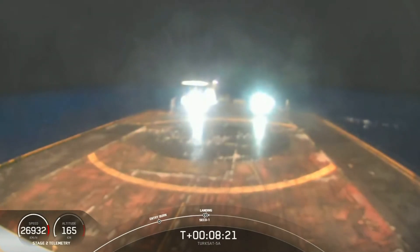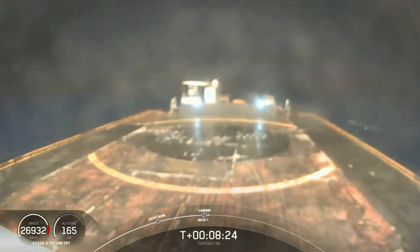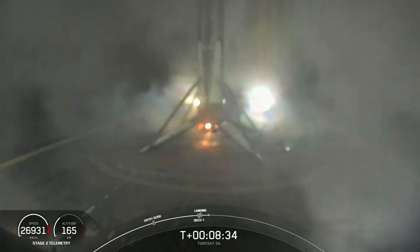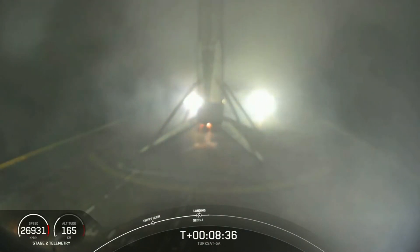And back on sea level, you can see here the drone ship. We have confirmation of good orbit on the second stage, and looks like we have a good landing on the drone ship as well.